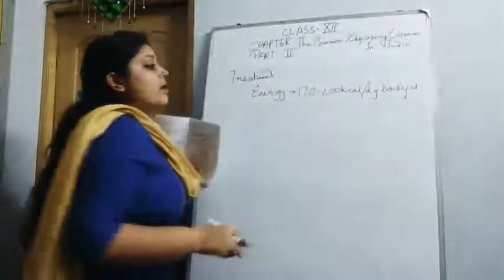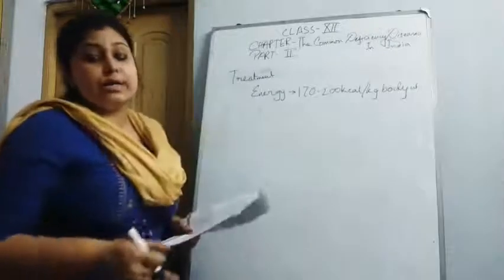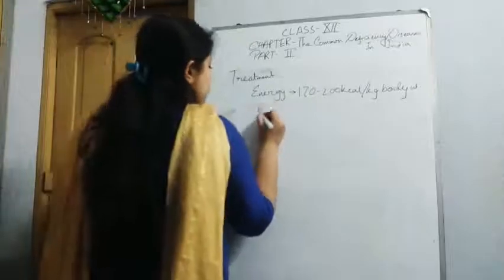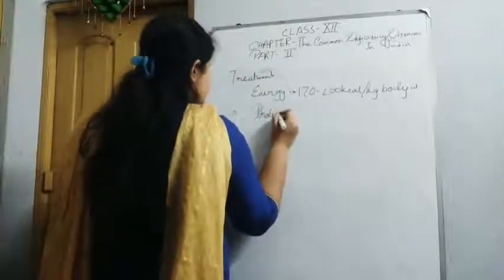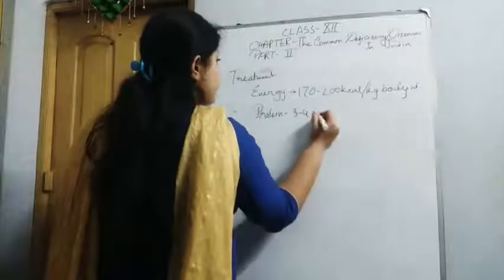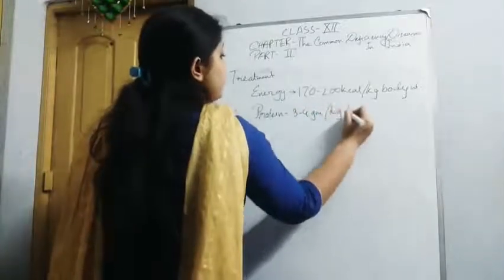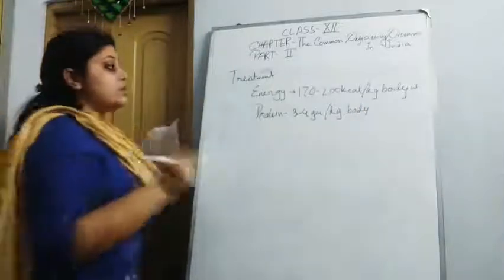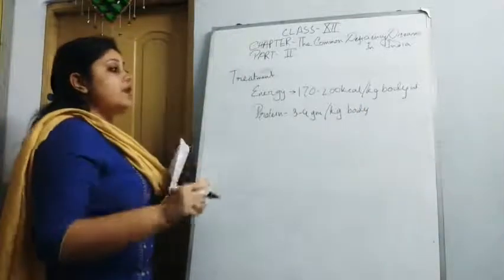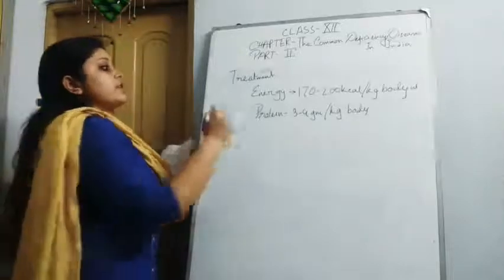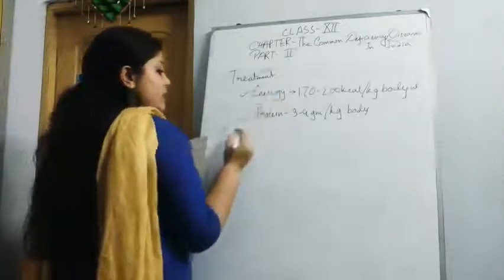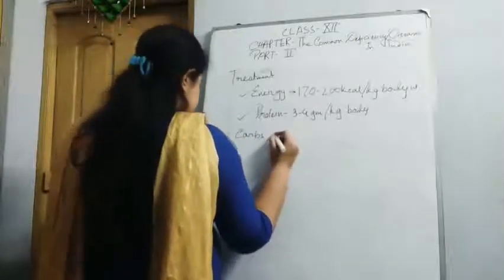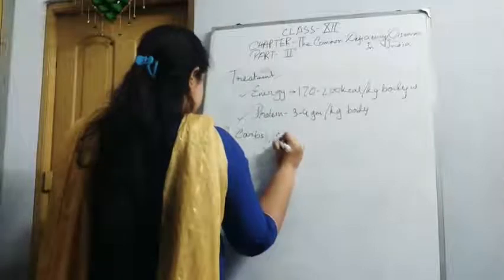This amount should be incorporated for the betterment of their health. Also, protein should be given at 3 to 4 grams per kilogram of body weight. As this is a macronutrient deficiency, the child should be provided with energy, protein, carbohydrates, and fats.